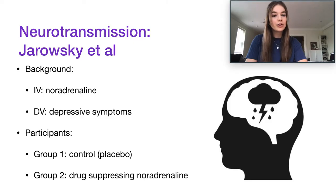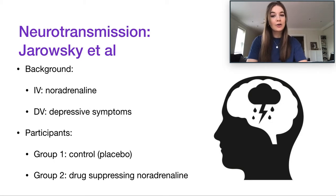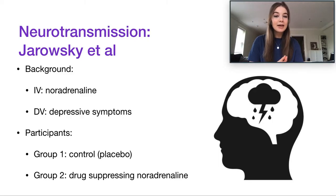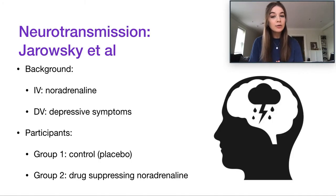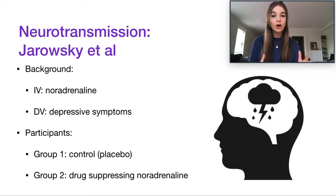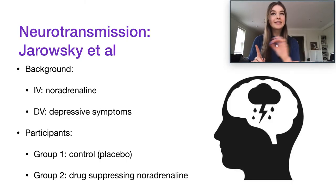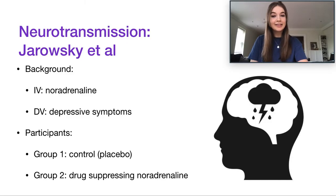The next example of neurotransmission we'll discuss is noradrenaline, which is actually both a neurotransmitter and a hormone — making this study useful for the hormones topic too. Noradrenaline is hypothesized to be part of the catecholamine hypothesis, which means it's part of the broader picture of depression. Depression is theorized to be affected by a range of hormones and neurotransmitters, with low levels of noradrenaline specifically linked to depressive symptoms.